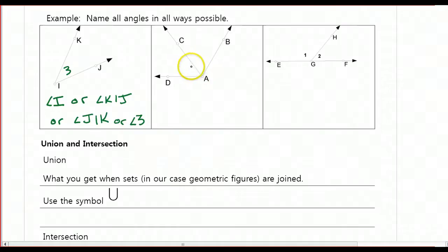Let's start with this bottom angle over here. We could call that angle DAC, or we could flip it around and call it angle CAD. If we wanted to put a number inside that vertex like 1, we could call it angle 1.